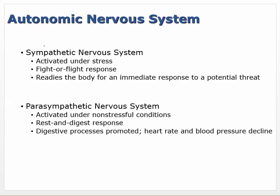The autonomic nervous system: the sympathetic nervous system is activated under stress, fight-or-flight response, and readies the body for an immediate response to a potential threat. The parasympathetic is activated under non-stressful conditions — rest-and-digest — digestive processes are promoted, heart rate and blood pressure decline.